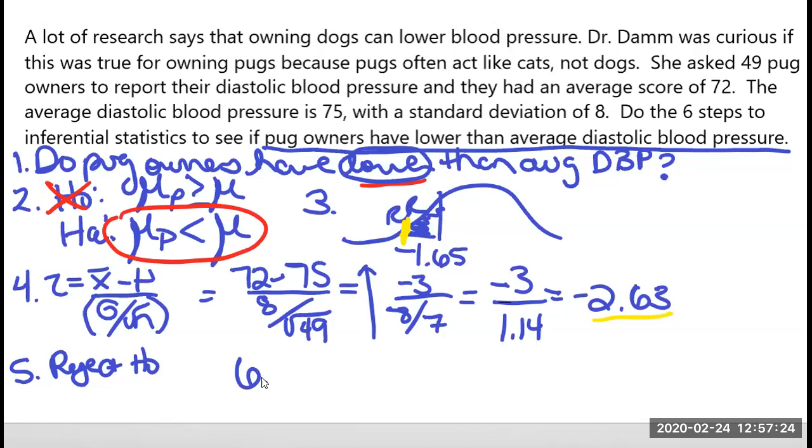So for step 6, I'm going to say that pug owners have lower diastolic blood pressure.